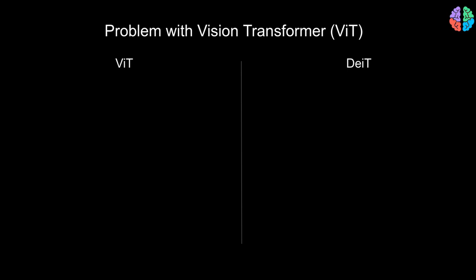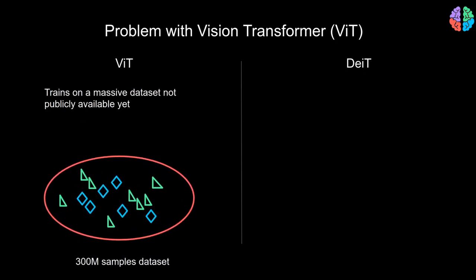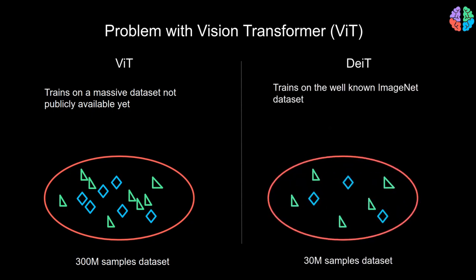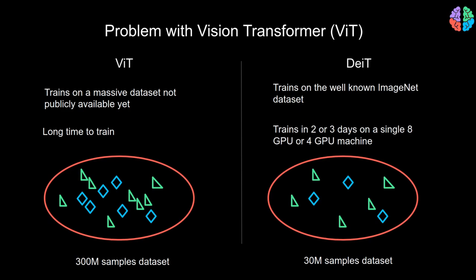Vision Transformers, or ViT, was the first paper showing that transformers can be used for computer vision tasks. It trained on a massive dataset of 300 million samples — an in-house dataset from Google that is not yet available to download. DeiT, on the other hand, is trained only using the well-known ImageNet, which is 10 times smaller. Because of the massive dataset size, ViT needs extensive compute power, making it impractical in the limited data regime. The training time for DeiT is 2–3 days on a single 4-GPU or 8-GPU machine.